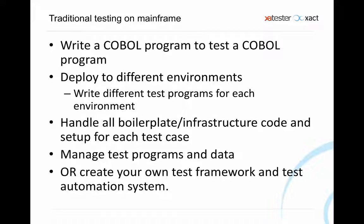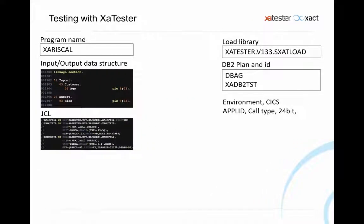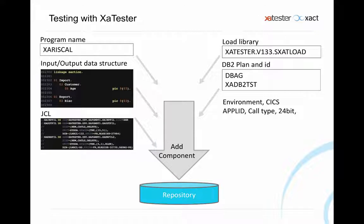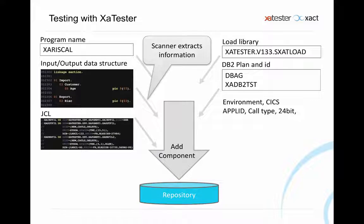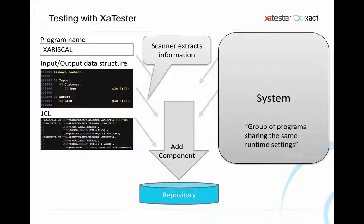With XA Tester, you don't have to do this yourself anymore. It still requires the same information about a program, but you only need to provide this once. The first time you want to create a test for a program, you collect all this information and add what we call a component to a shared repository. To make this easy, we have a scanner that can scan the source code or linkage section and add the structure in XA Tester format to the repository. We also have a system concept where you can group programs that share the same source and runtime settings, so you don't have to re-enter the same information for many programs.